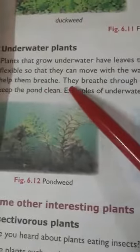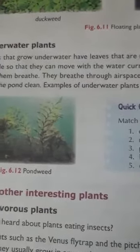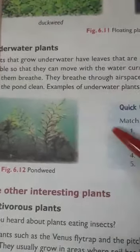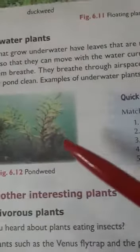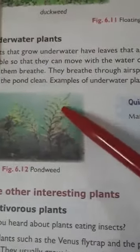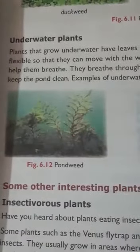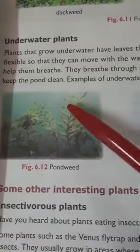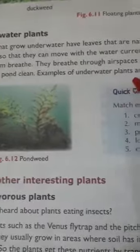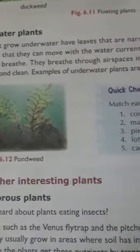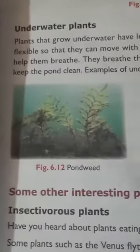Underwater plants have leaves that are narrow and long. Their body is flexible so they can move with water currents. They do not have stomata; instead, they breathe through air spaces in their stems. Underwater plants also help keep the pond clean. Examples are tape grass and pondweed.